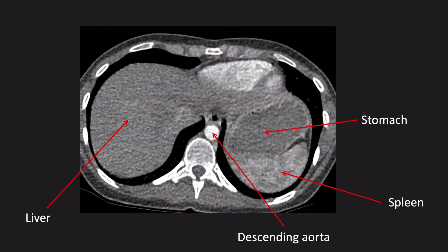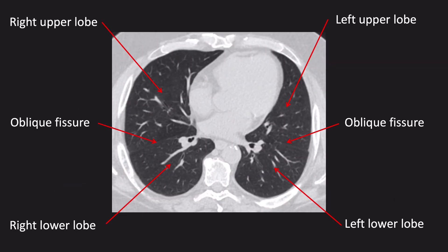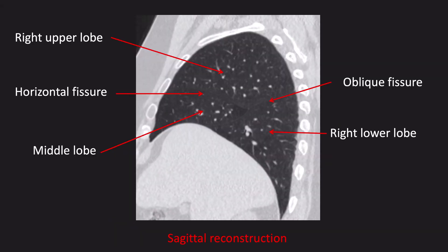Below the diaphragm, we can see the liver on the right and the spleen on the left with the stomach. As mentioned, the lungs are divided by fissures. The oblique fissure divides the upper and lower lobes from each other. On the right, the horizontal fissure divides the upper lobe from the middle lobe. If we look at a sagittal reconstruction, you can see the upper and middle lobes lie anteriorly in the chest and the lower lobes posteriorly.